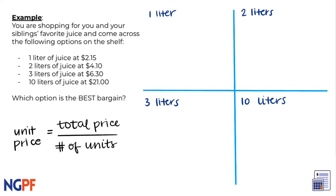For the first option, we know that $2.15 is the total price, which we can put in the numerator, and then we can divide by one liter. This just gives us $2.15 per liter. Now let's do the same process for the other options.